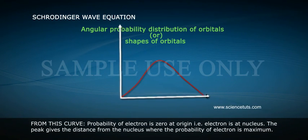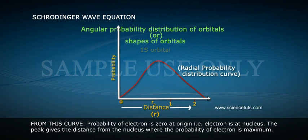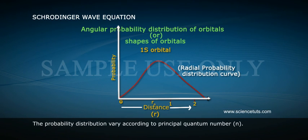From this curve, probability of electron is zero at origin, that is electron is at nucleus. The peak gives the distance from the nucleus where the probability of electron is maximum. The probability distribution varies according to principal quantum number n.